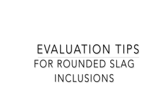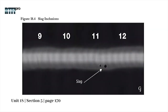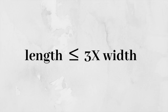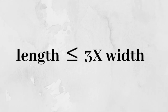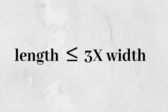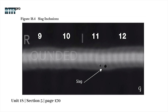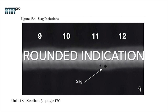Evaluation tips for rounded slag inclusions: the density of slag inclusions are typically lighter than porosity. When indications are round and satisfy the definition of a rounded indication — length is equal to or less than three times its width as per ASME codes — it shall be evaluated as a rounded indication.